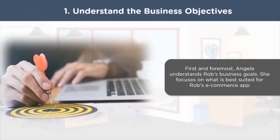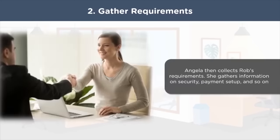First and foremost, Angela understands Rob's business objectives, problems and requirements. A business analyst understands the problems related to the business and comes up with the right solution to achieve business goals. She brainstorms around what is best suited for an e-commerce app focusing on electronic gadgets. In the next step, Angela gathers all the necessary requirements, ensuring she and Rob are on the same page regarding the project and its goals. Both of them arrive at a stipulated deadline for project completion. She gathers relevant information based on security of the app, payment setup, login, cost of products, and style.